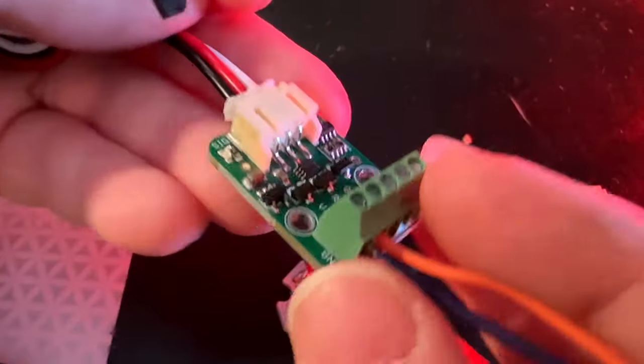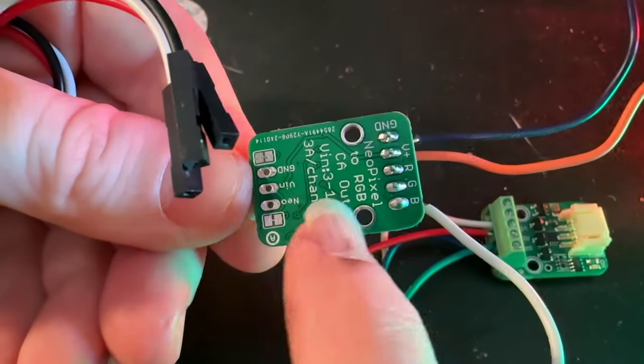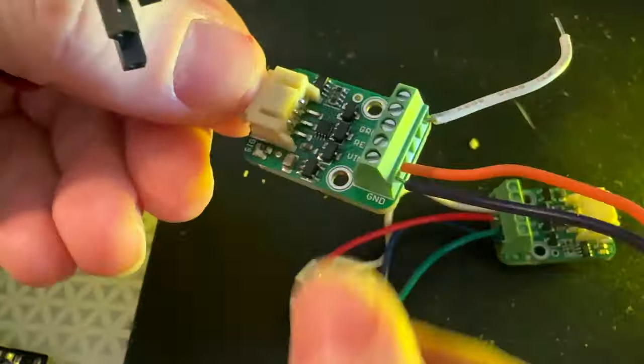All right, what is this? Okay, this is me testing out a new board design. It's a thing that takes a NeoPixel signal and converts it to an RGB common anode output.